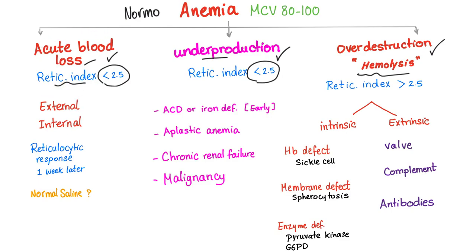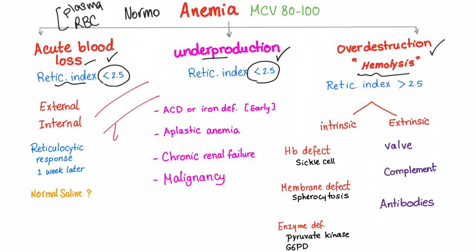In the beginning of acute blood loss, everything will be fine — RBC count, hemoglobin, hematocrit will all be normal. Why? Because you are losing blood — you are losing RBCs and plasma at the same rate. So the ratio stays normal and it's still normocytic, just a normal reading initially.